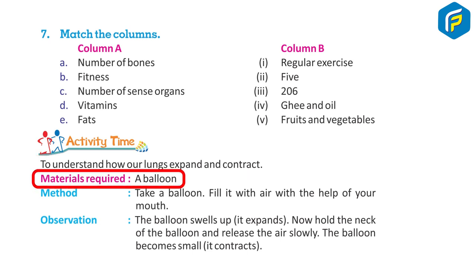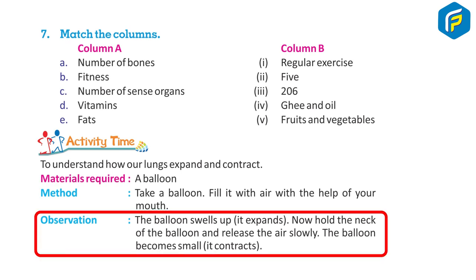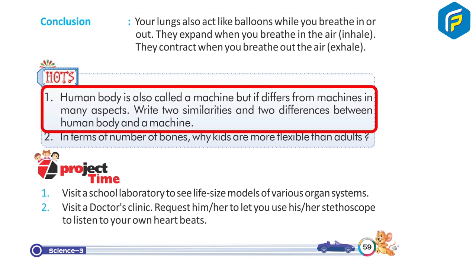Activity: To understand how lungs expand and contract, take a balloon and fill it with air using your mouth. The balloon swells up — it expands. Hold the neck and release the air slowly; the balloon deflates — it contracts. Conclusion: Your lungs act like balloons. They expand when you breathe in (inhale) and contract when you breathe out (exhale).